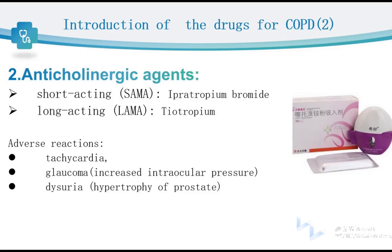Another type of bronchodilator is anticholinergic agents, which can also be divided into two subtypes: short-acting anticholinergics, or SAMA, and long-acting anticholinergics, or LAMA. Tiotropium is a popular drug used to treat COPD patients in the stable stage. Regarding adverse reactions, anticholinergic agents can increase intraocular pressure, so if a patient has glaucoma, we cannot use these drugs.